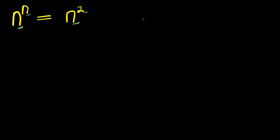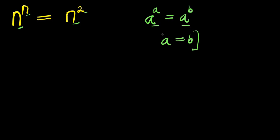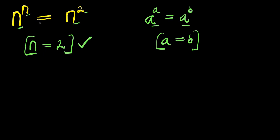Now, if you consider this identity: a power a equals a power t, since the bases are the same, you can say that a equals b. So applying this identity here, you are going to have n equals 2.